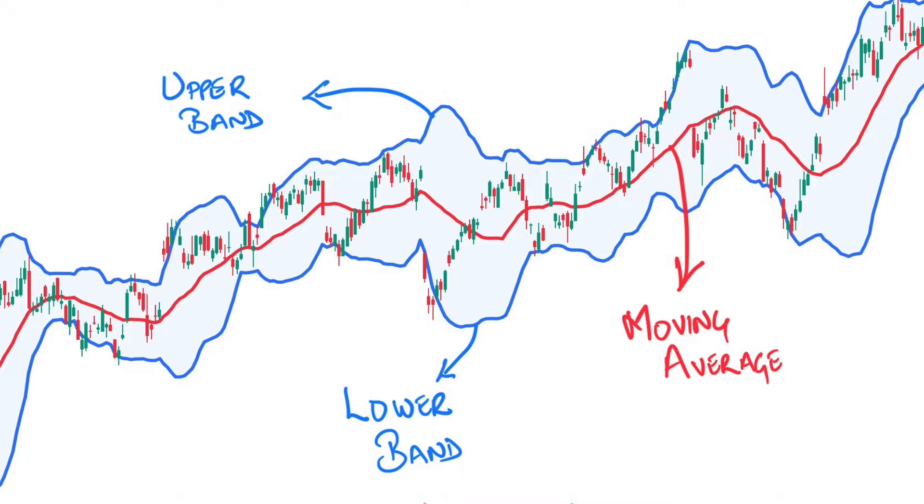In short, whatever time frame you use for plotting your price chart, the same will be used for calculating the moving average. Now let's move to our upper and lower bands. These are plotted by adding or subtracting two standard deviations from the moving average.